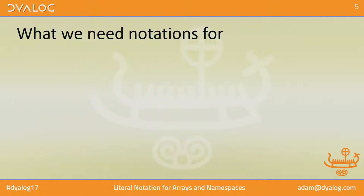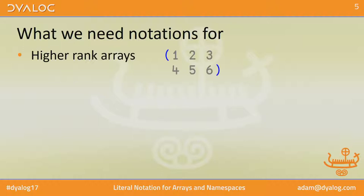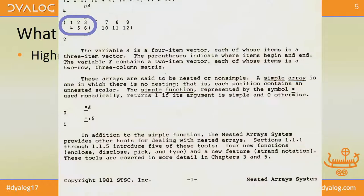So this is what we're going to propose: higher-rank arrays. If you have an unfinished parenthesis on a line, that's clearly a syntax error, so we can extend APL by assigning meaning to that syntax. Interestingly, this exact notation for a matrix isn't even new. Just two weeks ago, JFOB pointed out to me that in 1981, STSC published their nested array system, and as an ad-hoc notation for what a matrix would look like, they used this exact notation. Full circle.